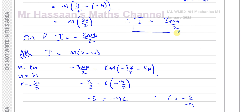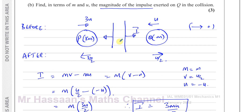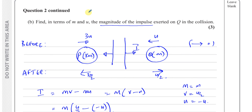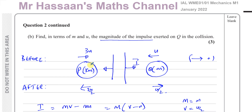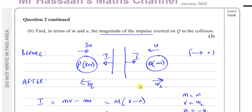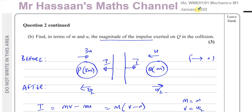That's an alternative way of finding K. The question appears designed for you to use conservation of linear momentum first and then impulse, but this is a valid alternative. Some questions do come up where the only way to solve the problem is by using the impulse on one particle. You should understand how to deal with both methods. Other questions from this January 2022 Mechanics M1 paper can be found on the playlist, and you can subscribe to my channel by clicking the link. Thank you for watching and see you soon.